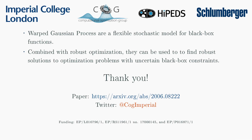I hope that in this video I've been able to convince you that warped Gaussian processes are a useful and flexible model for modeling black box functions, and that combining them with robust optimization allows optimizers to consider black box uncertainty in an intuitive way which can lead to better decision making. Many thanks for watching, and if you're interested in this work, please take a look at our paper on arXiv or follow us on Twitter.